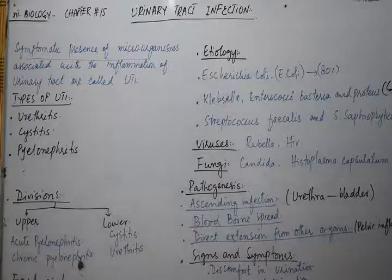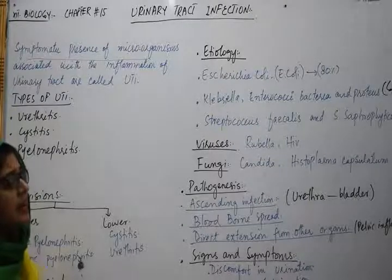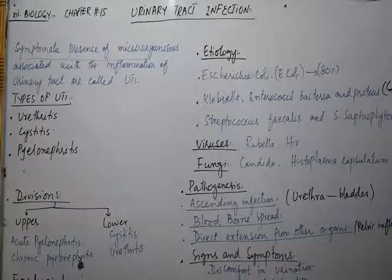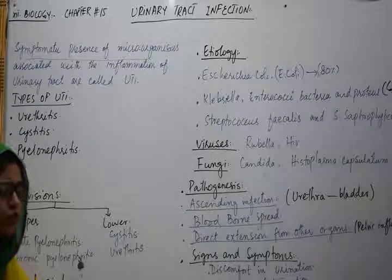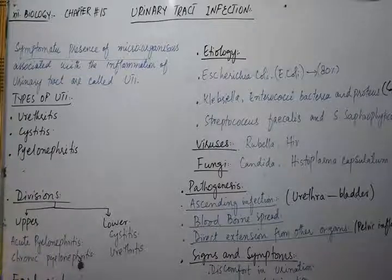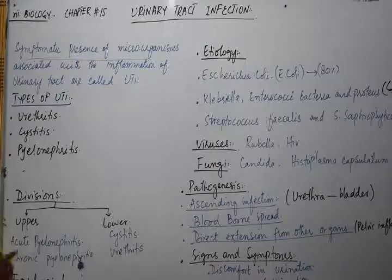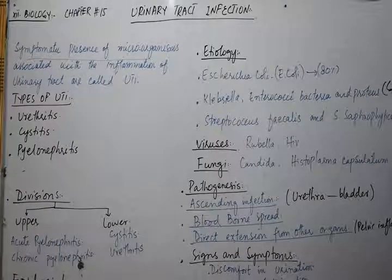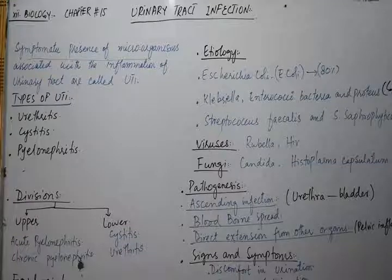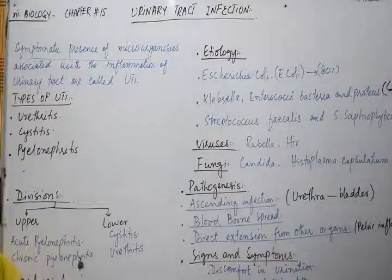Our whole body has bacterial flora which are advantageous for the body. But if bacteria enter a transient or different space, they become harmful. If bacteria enter the urinary tract and are not degraded or controlled, then inflammation occurs in the urinary tract. This is because the bacteria produce toxins, and as a result of those toxins, inflammation is created.